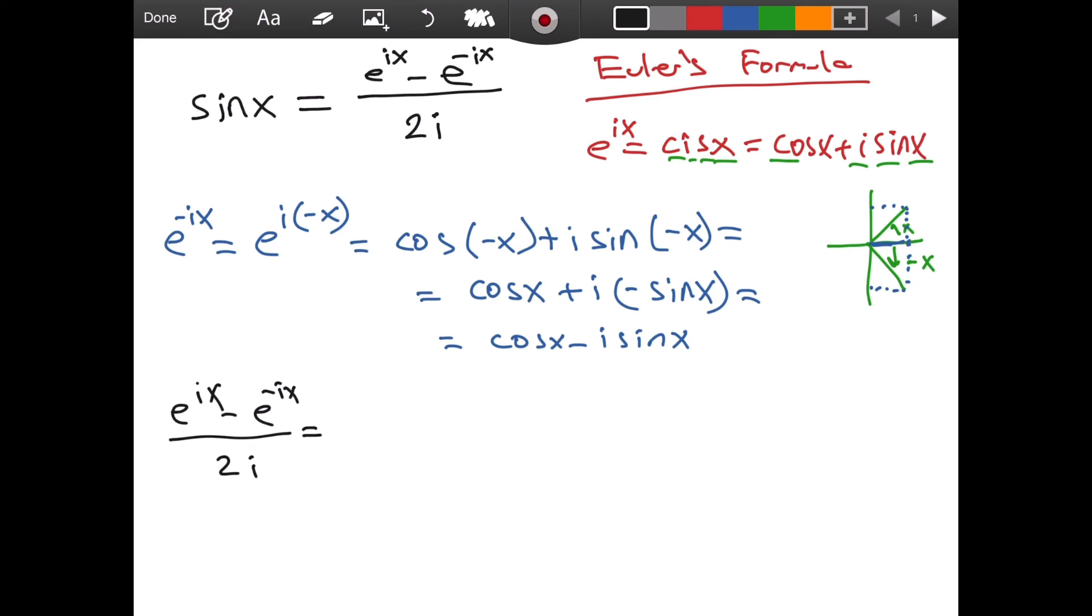This is equal to, we already have a formula for e raised to the power of ix. It comes directly from Euler's formula. It is cosine of x plus i sine of x. And then we just derived the formula for e raised to the power of negative ix. So it is going to be, let me put the negative sign here, we're going to have cosine of x, and if we distribute the negative, it will be plus i sine of x.